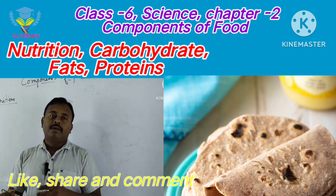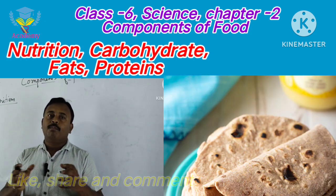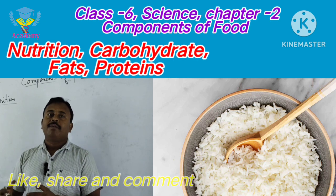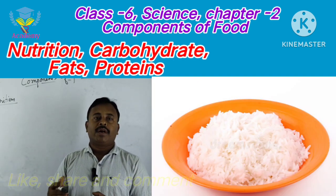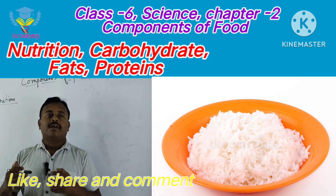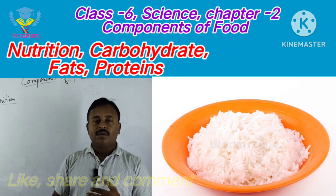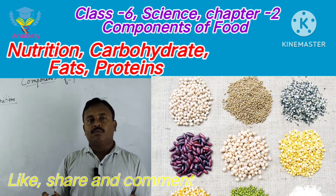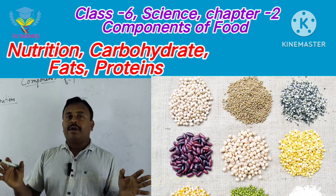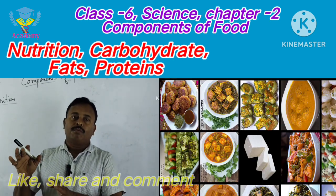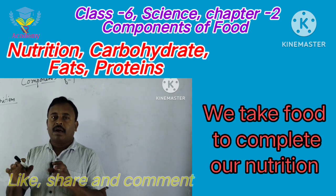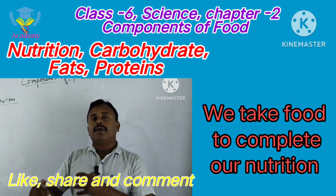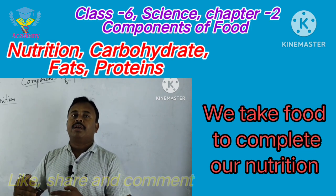In a food item there may be one or more food components, or any food item may be rich in a particular component. For example, when we are taking rice, rice is a rich source of carbohydrate. When we are taking pulses, pulses are a rich source of protein. This way all food items have different types of food components — carbohydrate, protein, fat, vitamins — these are the ingredients.